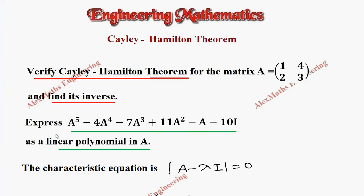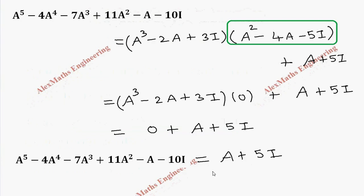So in the question, we are expressing this as a linear polynomial in A, and we got the linear polynomial in A as A plus 5I.